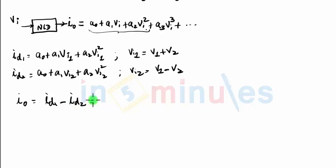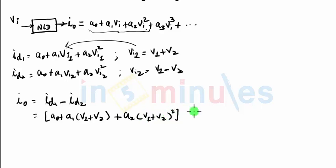Now if we perform this ID1 minus ID2 let us see what we are going to get. ID1 is A0 plus A1, now VI1 I will replace. VI1 is V1 plus V2 plus A2 VI1 squared which is V1 plus V2 squared. This is my ID1 minus ID2 will be A0 plus A1 V1 minus V2 plus A2 V1 minus V2 squared.